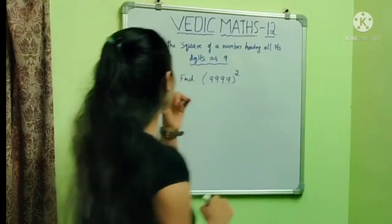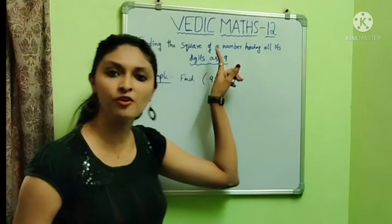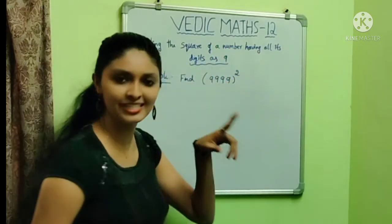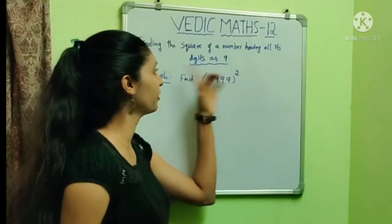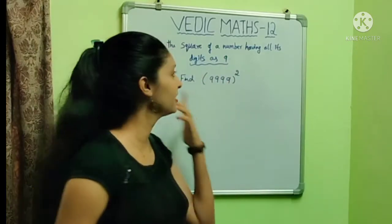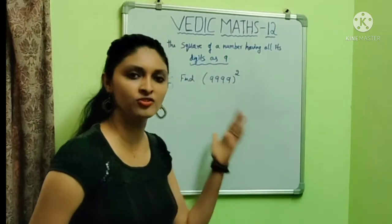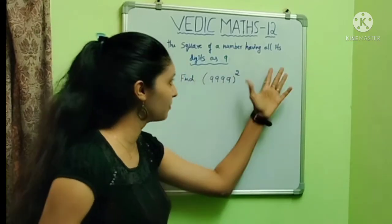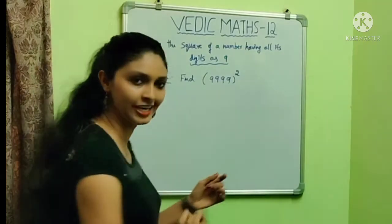The trick is about finding the square of a number which has all its digits as 9 — like finding the square of 999, 9999, 99999 — squares of those numbers which are having only the digit 9.